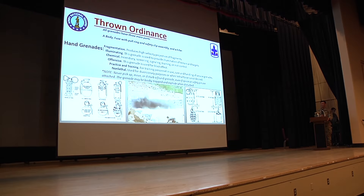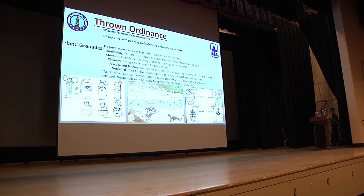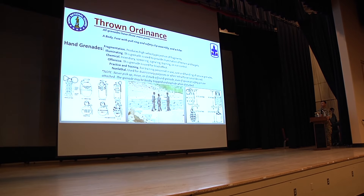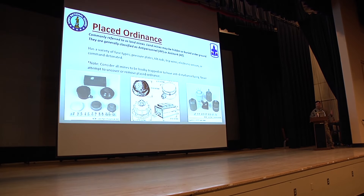Grenades contain three main parts: a body, a fuze with a pull ring, safety clip, and a filter. Place ordnance — you may encounter plenty of these over there as well. Containers may be either wood, plastic, or metal.